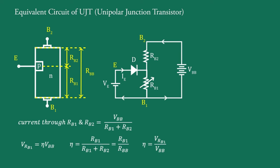The voltage eta VBB appearing across RB1 reverse-biases the diode, and therefore emitter current IE is 0. If a progressively rising positive voltage is applied to the emitter, the diode will become forward biased. When the input voltage exceeds eta VBB plus VD — where VD is the forward voltage drop across the diode — the diode will fire and IE will begin to flow through RB1.